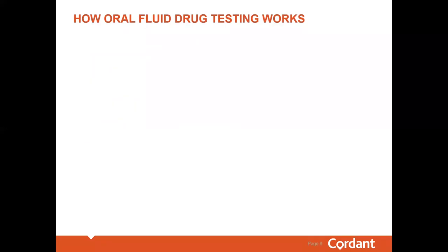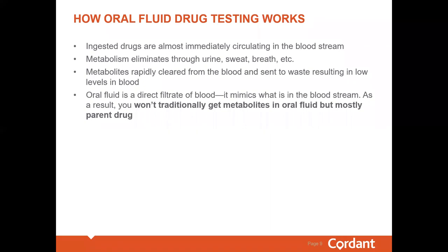To better understand differences in interpreting results between oral fluid and urine, we should talk about the science behind it. When drugs are ingested, they are almost immediately circulating in the bloodstream and distributing to all areas of the body. The body metabolizes these drugs and then eliminates them through urine, sweat, breath, etc. These metabolites are rapidly cleared from the blood and sent to waste, so you won't have high levels of metabolites in the blood. There is a very rich blood supply to the salivary glands where drugs diffuse into the saliva from the bloodstream — this is why oral fluid is considered a direct filtrate of blood. It mimics what is in the bloodstream, and as a result, you won't traditionally get metabolites in oral fluid, but mostly parent drugs.